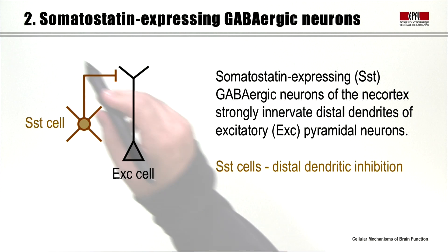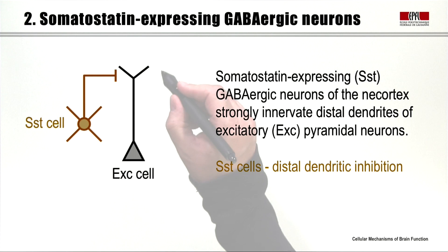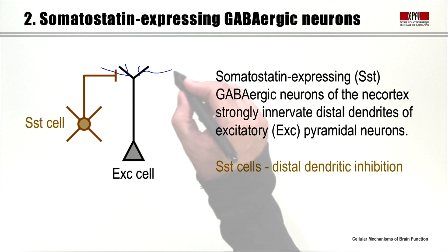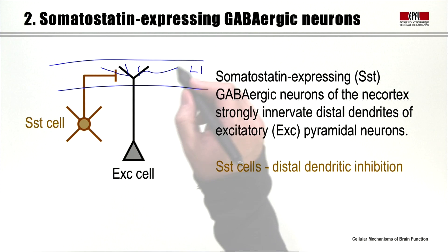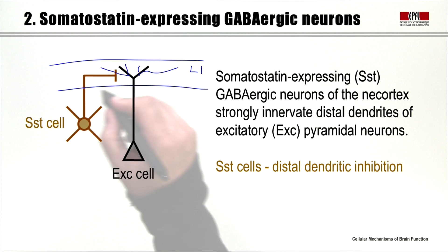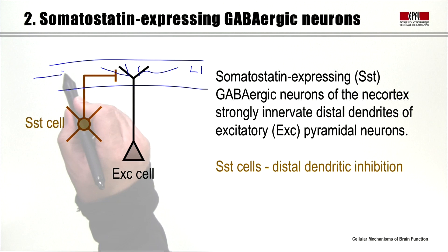The second type of GABAergic neuron to consider are the somatostatin-expressing GABAergic neurons. These neurons are particularly interesting because many of them send their axonal arborizations to a very specific region of the excitatory pyramidal cells — they target distal dendritic regions. Many excitatory pyramidal neurons have extensive arborizations right at the top of the brain in layer 1, where the pyramidal cells extend their dendritic tuft region, and this is specifically targeted by the inhibition of the somatostatin-expressing neurons.